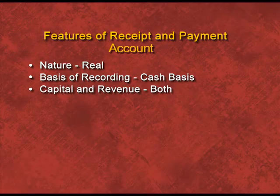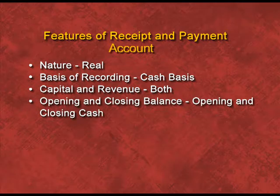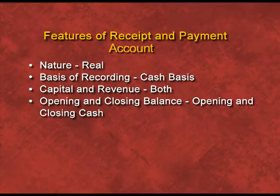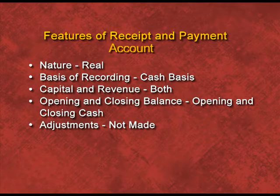Third, capital and revenue items: all capital and all types of revenue items are both recorded in the receipt and payment account. Fourth, opening and closing balances: we prepare the receipt and payment account to check the cash balance at the beginning and at the end. Fifth, adjustment: we need not make any type of adjustment under this account because we record only cash transactions. Items like outstanding, prepaid, accrued, and advance are not included.